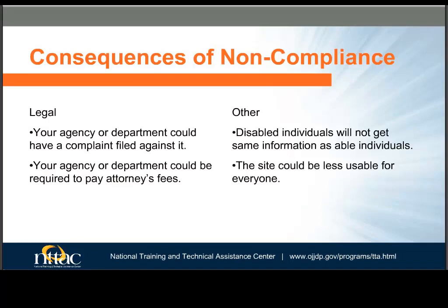Let's talk about what happens if you don't comply with Section 508. Any individual with a disability can file a complaint or civil action against a federal department or agency if they feel the department or agency has not complied with accessible technology standards. Besides the legal ramifications, if you don't comply with Section 508, you are preventing disabled individuals from obtaining the same information as non-disabled individuals.